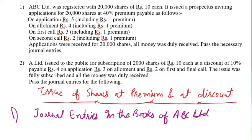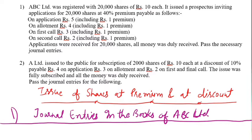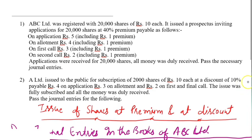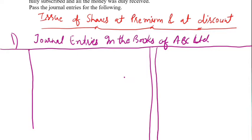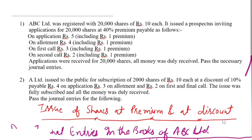We will maintain the format: date, particulars, LF, amount debit and amount credit. Since no date is mentioned in this question, we will leave the date column. When there is premium or discount in our question, we will show it in the due journal entry. The first transaction is for application money received.